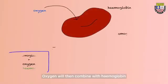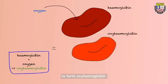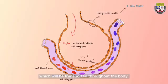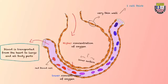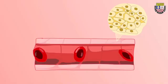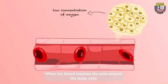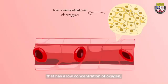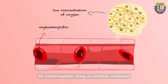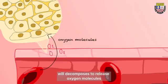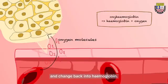Oxygen will then combine with haemoglobin to form oxyhaemoglobin, which will be transported throughout the body. When the blood reaches areas around body cells that have a low concentration of oxygen, the oxyhaemoglobin, being an unstable compound, will decompose to release oxygen molecules and change back into haemoglobin.